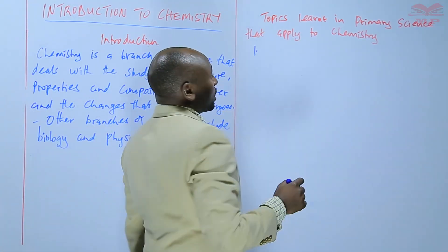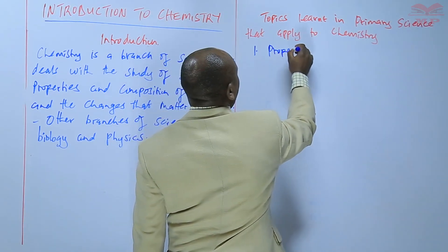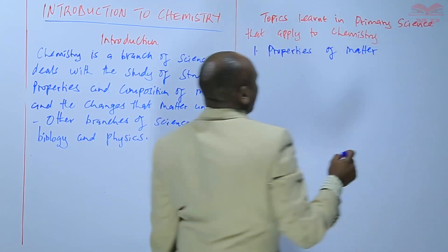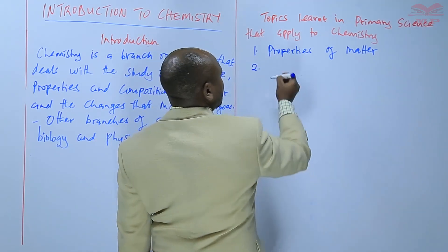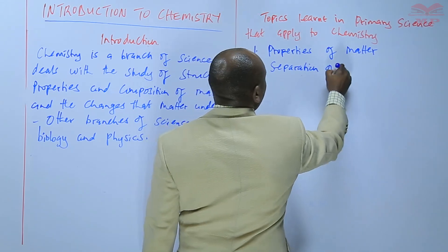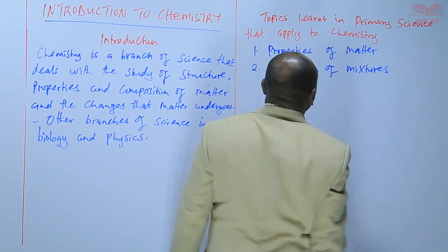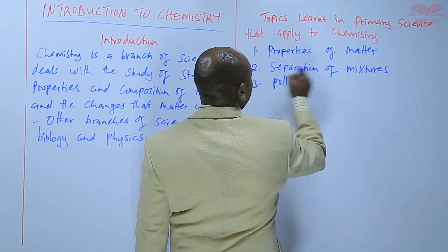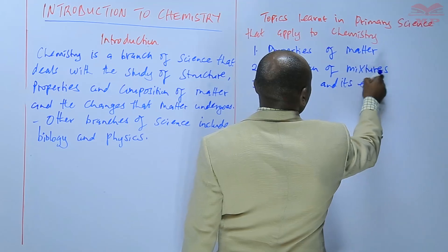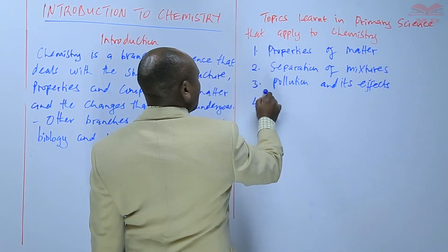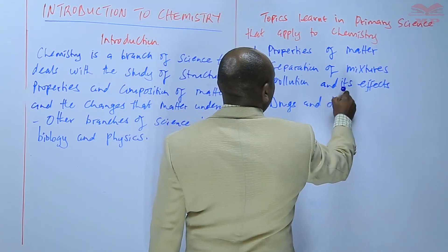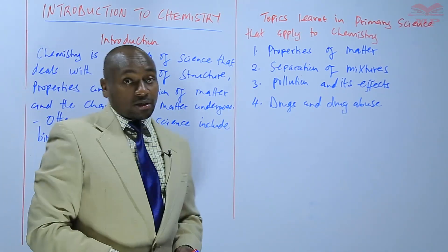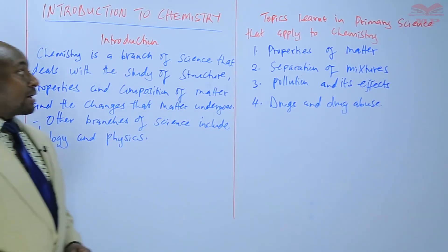First, in primary school, you learnt about the properties of matter. You also learnt a topic such as separation of mixtures — methods of separating mixtures. You also learnt about pollution and its effects, and you learnt about drugs and drug abuse.